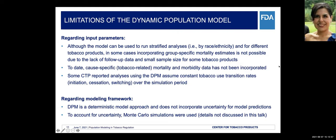Regarding the modeling framework itself, the DPM is a deterministic model and does not incorporate uncertainty for model predictions. To account for uncertainty, we ran multiple simulations varying key input parameters in the policy scenario using Monte Carlo simulation, enabling us to compute ranges — such as 5th and 95th percentiles — for each outcome parameter, giving an idea of uncertainty under extreme scenarios.